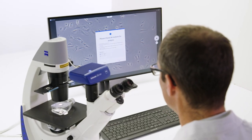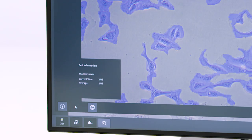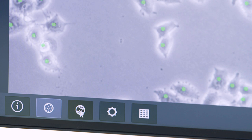Opt for the Zeiss LabScope AI cell confluency module and start to improve the quality of your cell culture today. Make your experiments more reproducible.